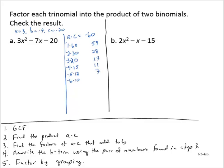I wanted negative 7, so since negative 5 and 12 gave a sum of 7, I'm going to change the signs. Instead of negative 5 and 12, let's go with 5 and negative 12. That gives a sum of negative 7 — that's the pairing I like. So my magic numbers are 5 and negative 12. I rewrite the polynomial as 3x squared plus 5x minus 12x minus 20.